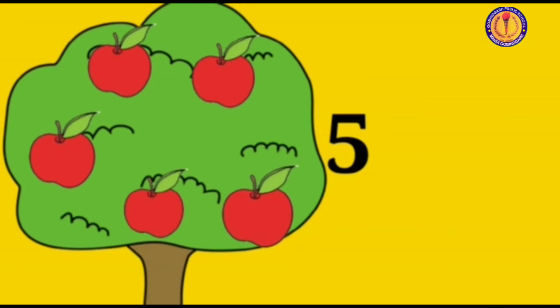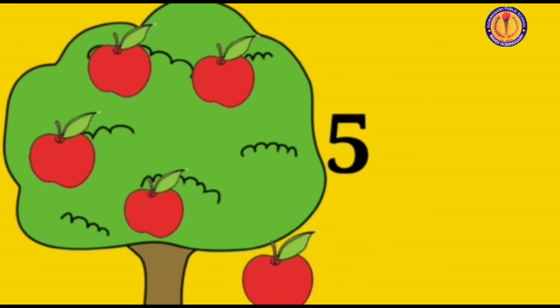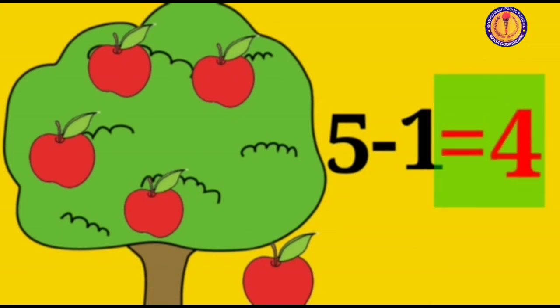You can see five apples on the tree. One apple fell down. Can you tell how many apples are left on the tree? 5 minus 1 is equal to 4. Only 4 apples are left on the tree now.